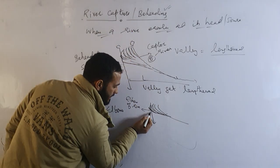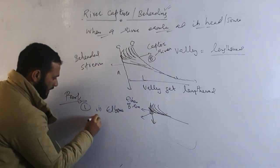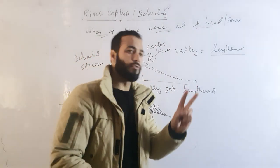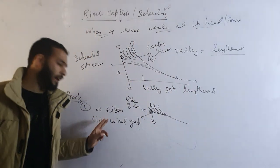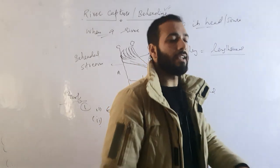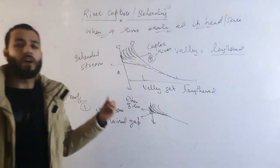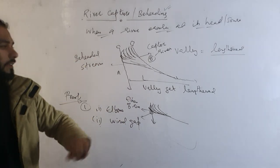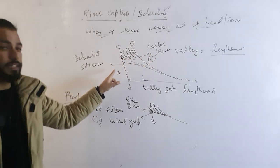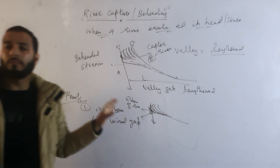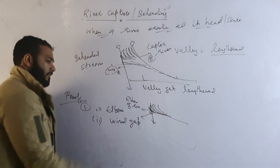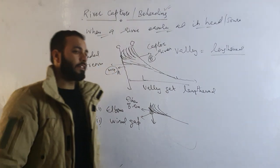The second proof is the wind gap. This area left behind after capture is called the wind gap. Whenever you find these two features — the elbow of the river and the wind gap — those are the proofs that a river has been captured by another river. River B is the captor river, river A is the beheaded river, and the proofs are the elbow and the wind gap.